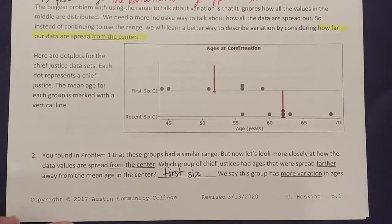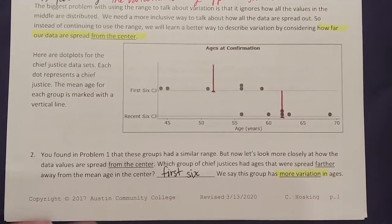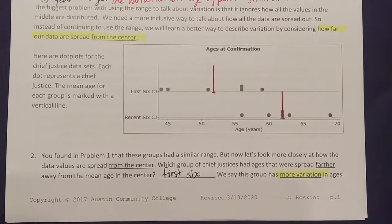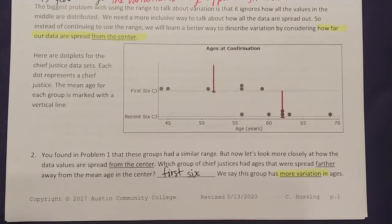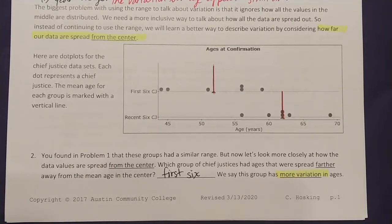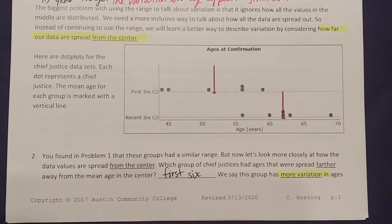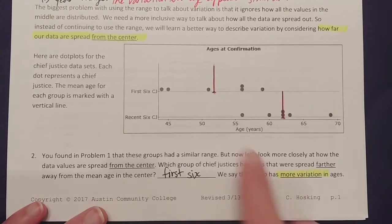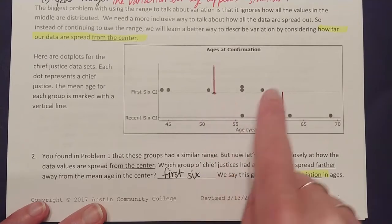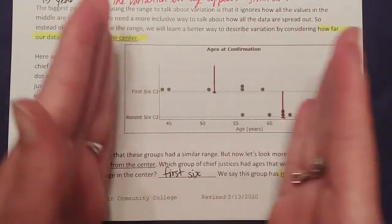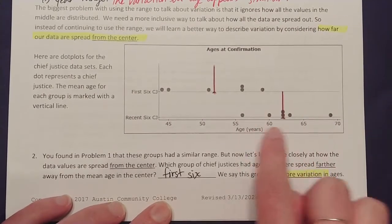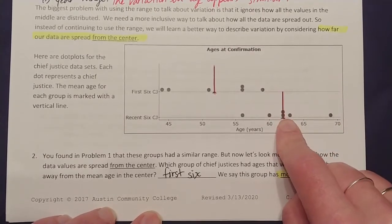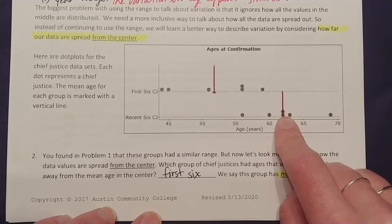We say that the first group has more variation in ages. In a study, more variation may indicate that what you're trying to find is not as precise as you want. If you have a lot of spread around your center, the mean is not a very good representation of the overall data. Whereas if values are much closer together, the mean becomes a better descriptor of the data.